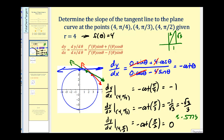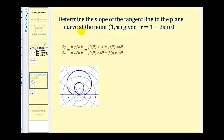Now let's determine the slope of the tangent line to the plane curve at the point (1, π), given that r equals one plus three sine theta. The point (1, π) is shown in red, and the tangent line there looks like a gently negative slope. Since r equals one plus three sine theta, that is our f of theta, with f prime of theta equal to three cosine theta.